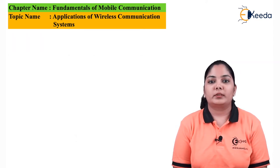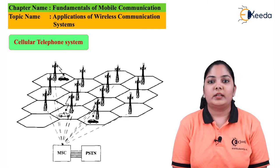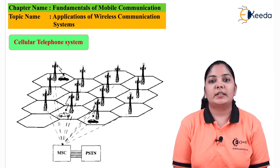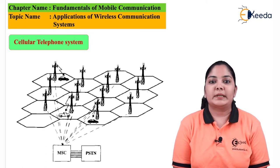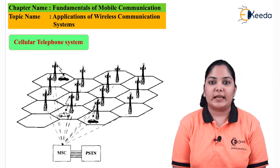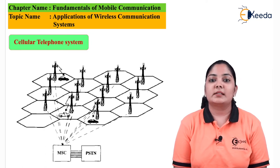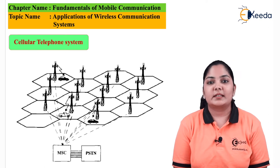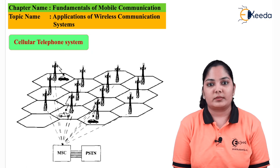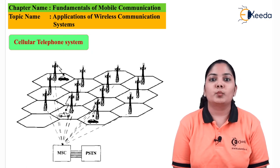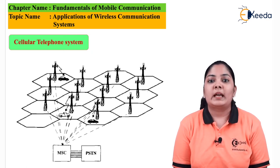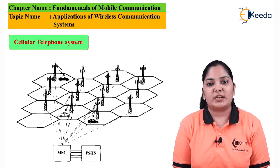The next topic that we are going to see in applications of wireless communication systems is cellular telephone systems. As we can see in the diagram, there are hexagonal cells. These hexagonal cells are nothing but geographical locations in which the mobile will be moving from one place to another. At the center of these hexagonal cells, we have base stations.